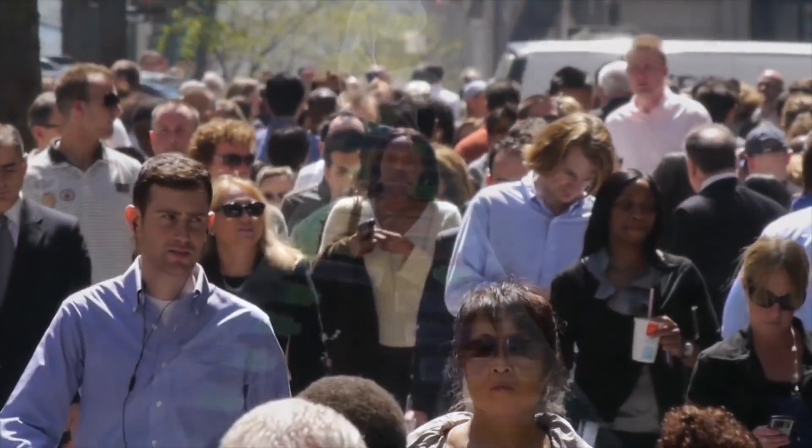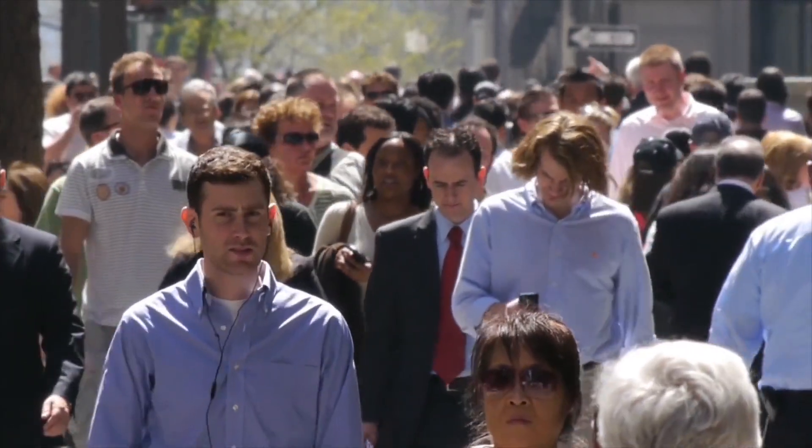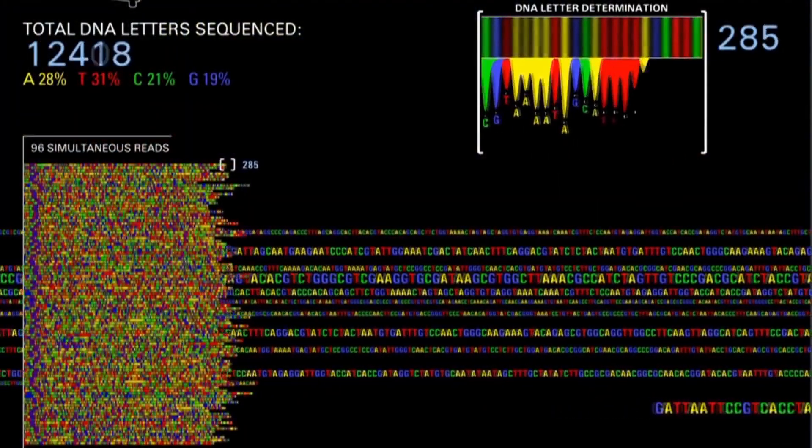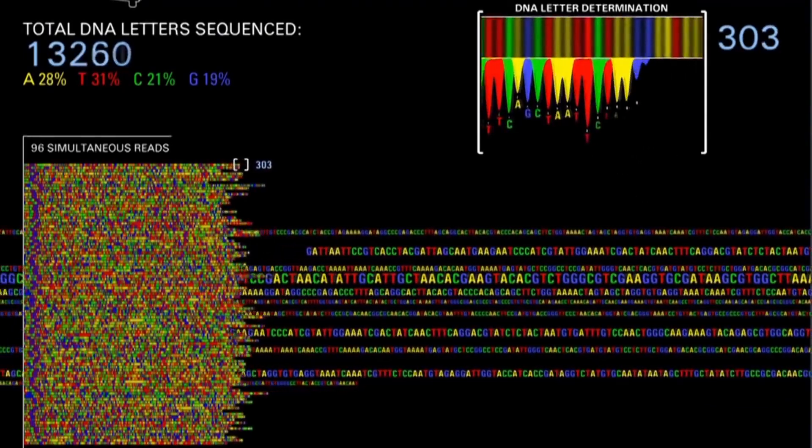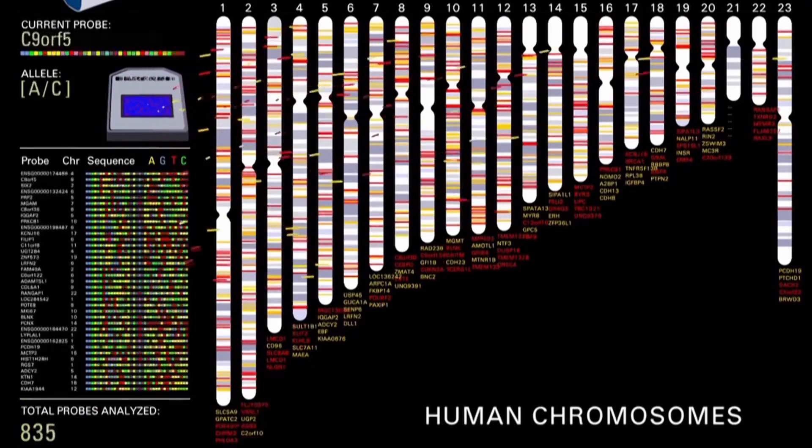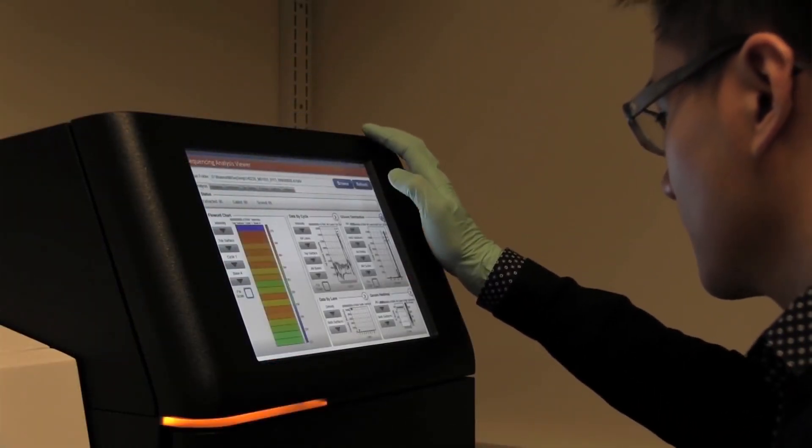Our genes shape who we are as individuals and as a species. Genes also have profound effects on health, and thanks to advances in DNA sequencing, researchers have identified thousands of genes that affect our risk of disease. To understand how genes work, researchers need ways to control them.